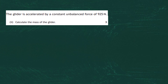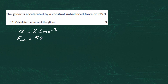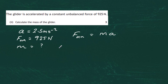Part a(ii) asks us to calculate the mass of the glider. We're told the unbalanced force is 925 newtons and we've just found the acceleration is 2.5 m/s². Using F_unbalanced = m × a, we rearrange to get m = F_unbalanced divided by a.